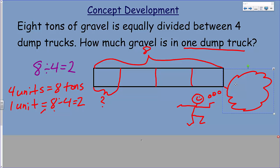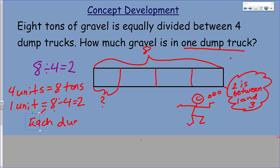Our stick figure is thinking: is my answer reasonable? Is 2 between 1 and 3? Yes, it is. That seems reasonable because we're looking at our problem — 4 dump trucks, dividing by 4, that's straightforward. So I'm going to write: each dump truck held 2 tons of gravel.